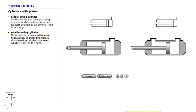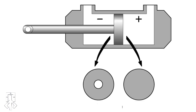In a double acting cylinder of the type shown in the picture, the piston's area becomes smaller on the side where the piston rod sits, and so does the press force. That is why the piston side is called positive and the piston rod side is called negative. For the same reason, the speed of the piston movement becomes faster to the right in the picture.